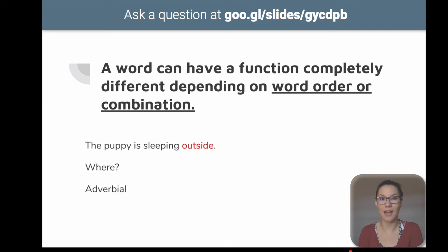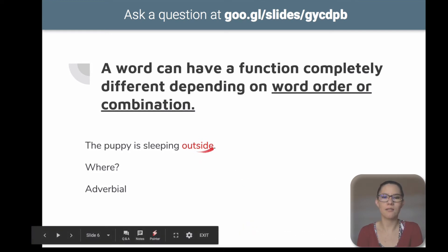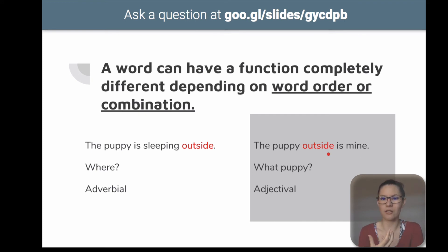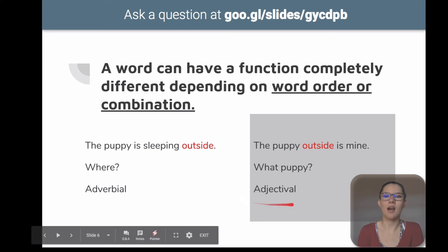We could say, the puppy is sleeping outside. The word outside is an adverb, and in this sentence it is working as an adverbial, meaning that it is answering the question, where? Where is the puppy? Outside. But, look at this other example. The puppy outside is mine. Outside is still an adverb, but it is not working as an adverbial. It is working as an adjectival. Why? Because it is identifying what puppy we're referring to. We want to be specific and we are describing the puppy. That's why outside has an adjectival function in this example.